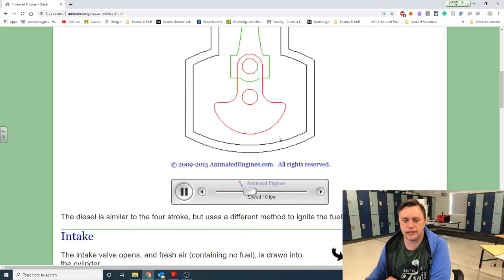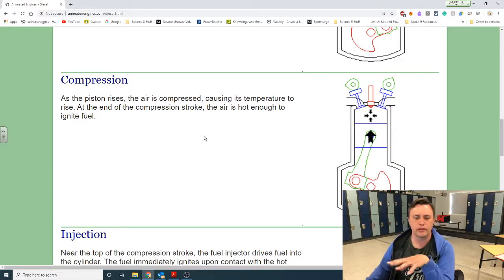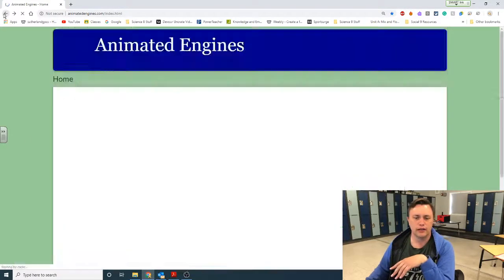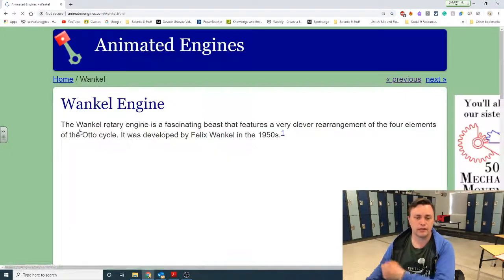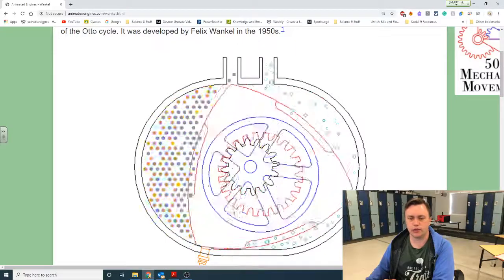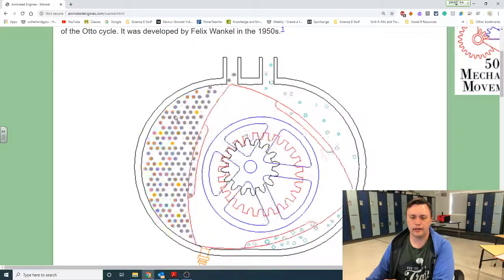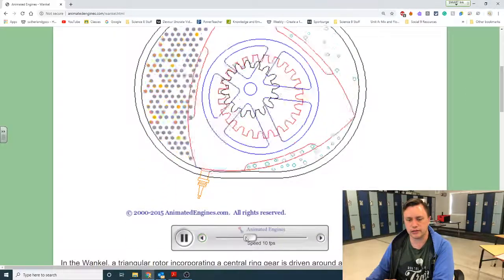This one has multiple camshafts that are operating both an intake port and an exhaust port. That is a diesel motor operating. I doubt if your parents would have one of these, but this is called the Wankel rotary engine, which has a three-lobe rotor that's spinning around. I'm going to slow this down a little bit.